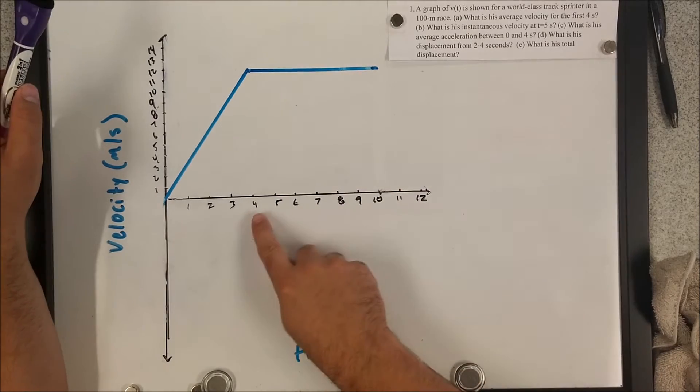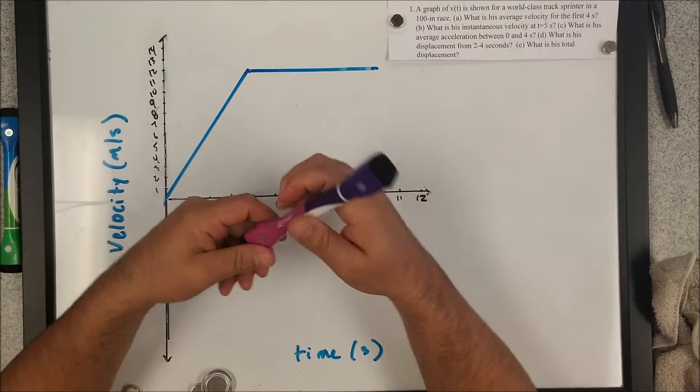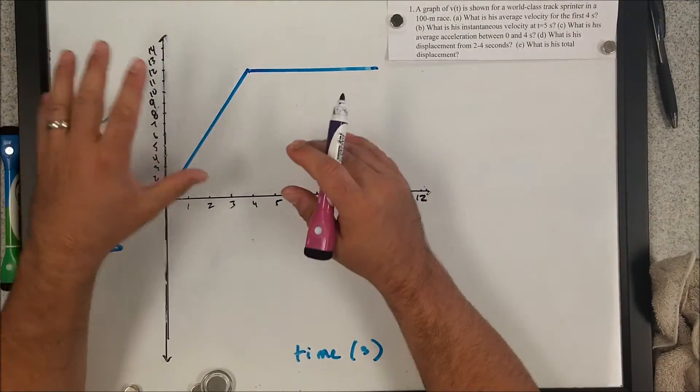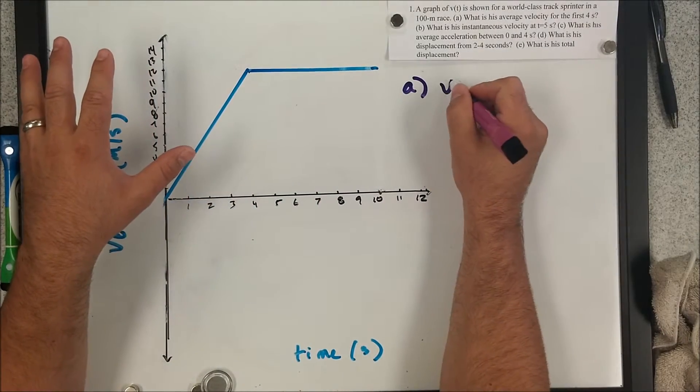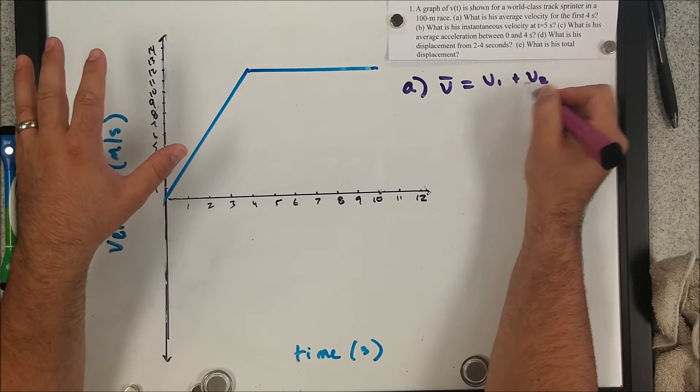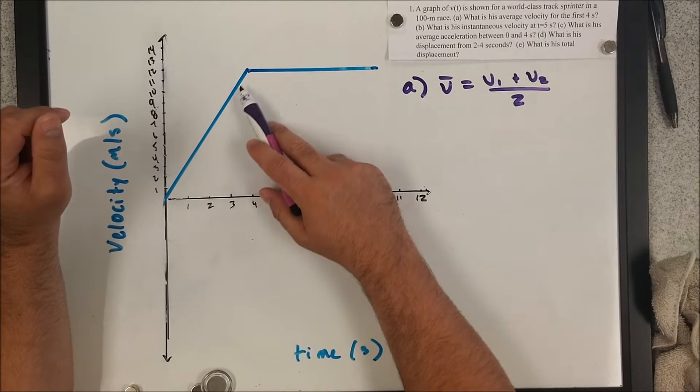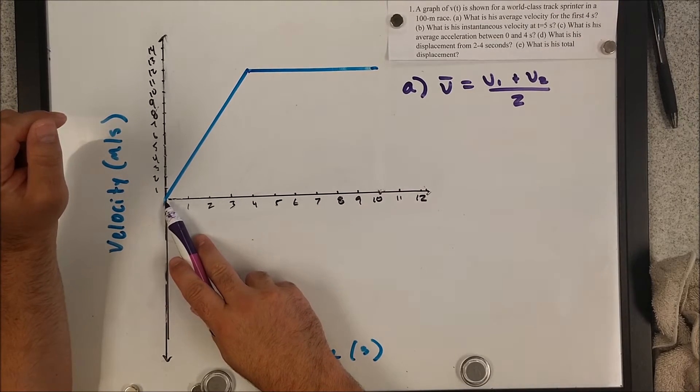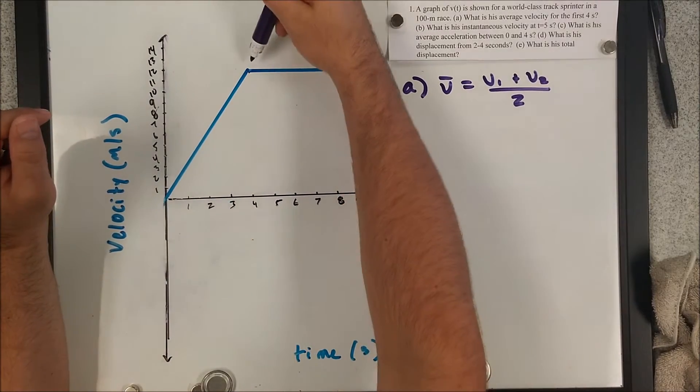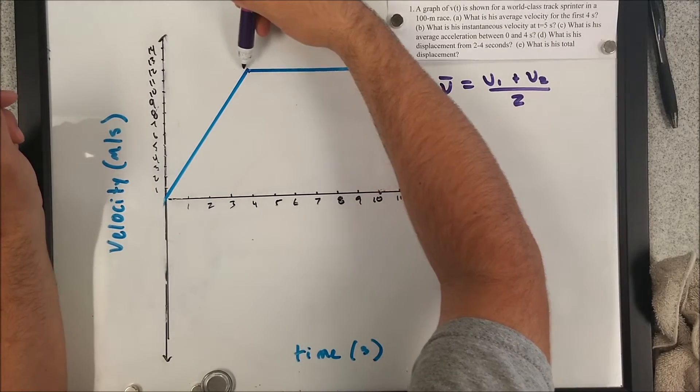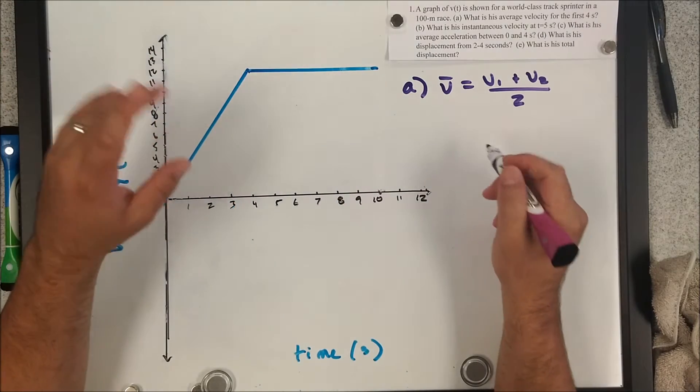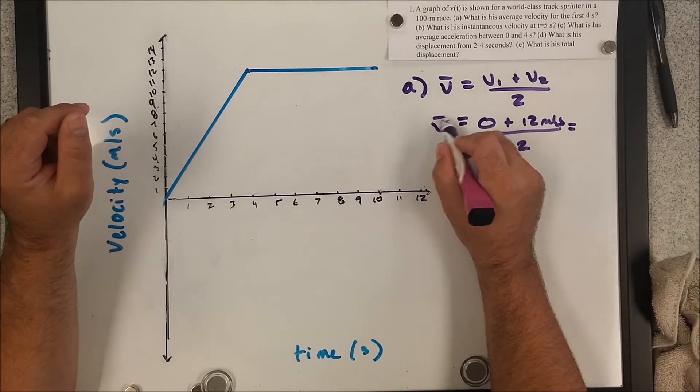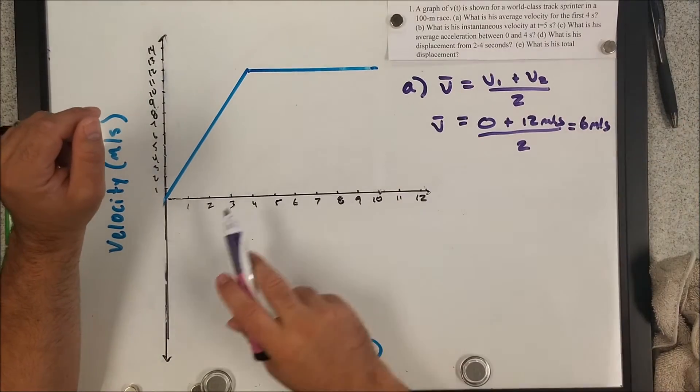We want to know the average velocity during the first four seconds. This is just going to be straight up average velocity is the sum of each velocity divided by the total velocities. We could do this because we know that they're experiencing a constant uniform accelerated motion. We know the velocity in the beginning has got to be zero, and we know the velocity at the end of that four seconds is 12 meters per second. So my average velocity is going to be zero plus 12 meters per second divided by two. I'm going to find out that I have an average velocity of six meters per second during the first four seconds.